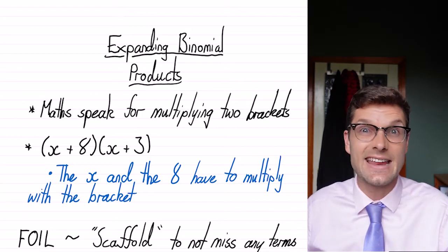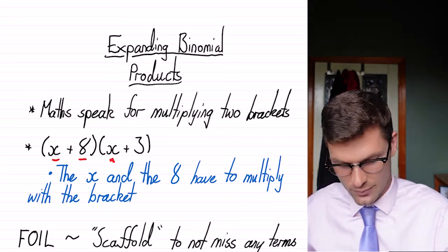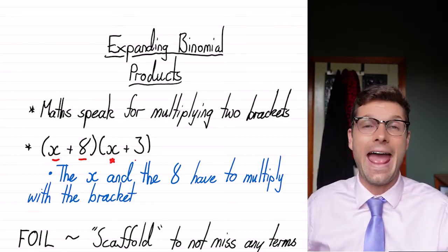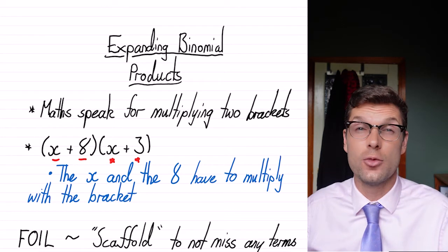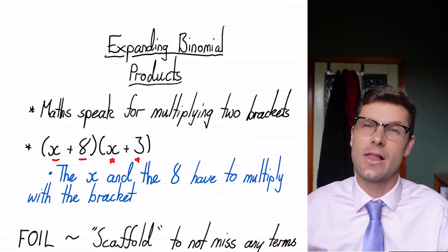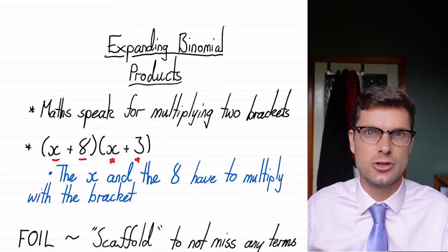So remember that when there's no sign, we're saying that's multiplying. So this sentence is saying that both the x and the eight have to multiply with this one, and they have to multiply with this one. So it's pretty similar to the normal expansion that we've done in the last couple of videos. But instead of one term, now we've got two terms.